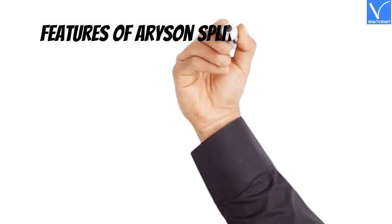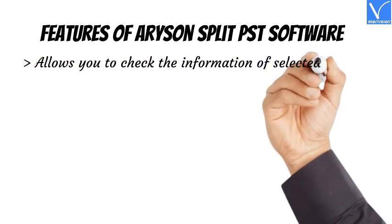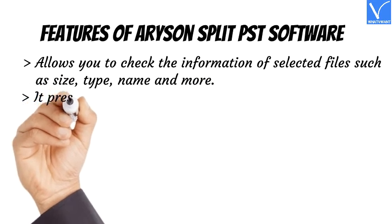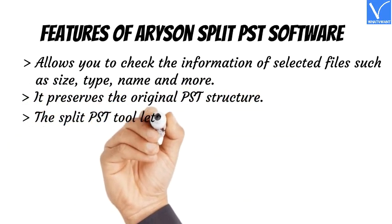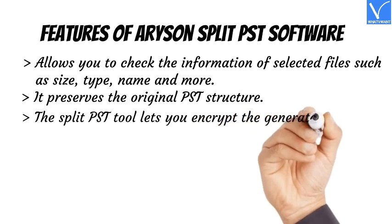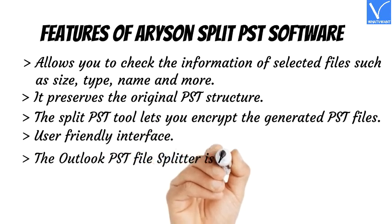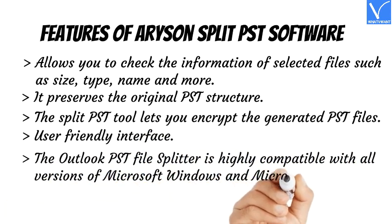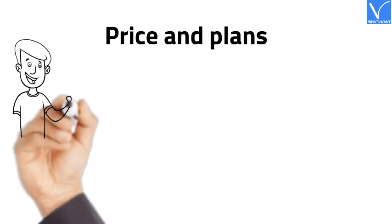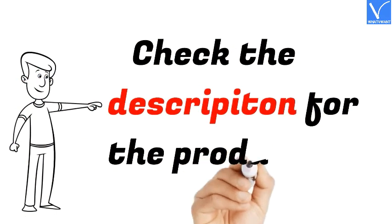Features of Arison Split PST Software: allows you to check the information of selected files such as size, type, name, and more; preserves the original PST structure; lets you encrypt the generated PST files; user-friendly interface; highly compatible with all versions of Microsoft Windows and Microsoft Outlook. The price and plans are exhibiting on the screen. The product link is provided in the description.